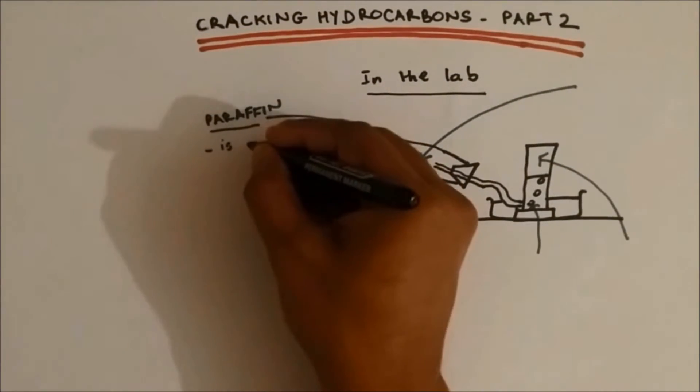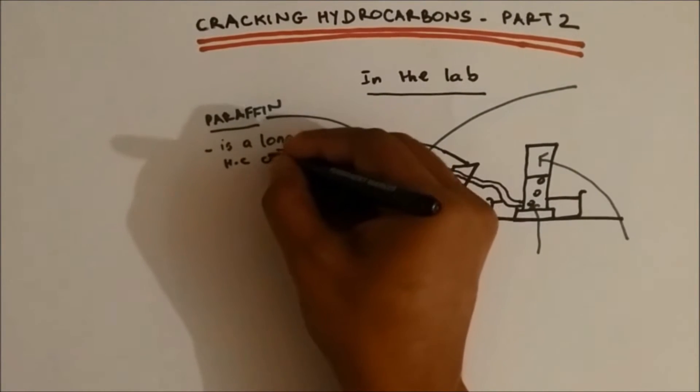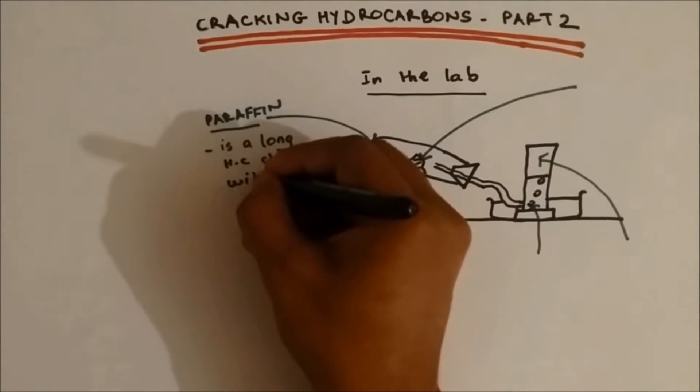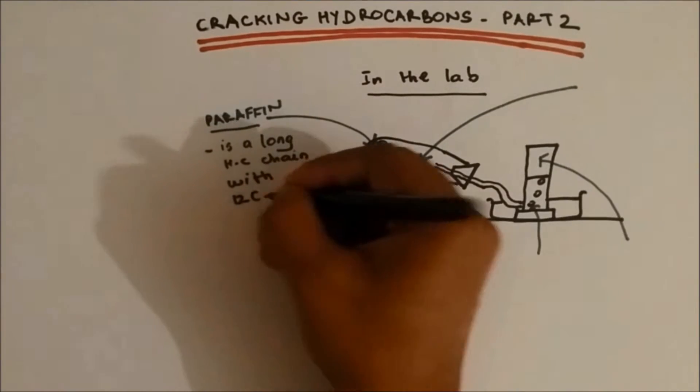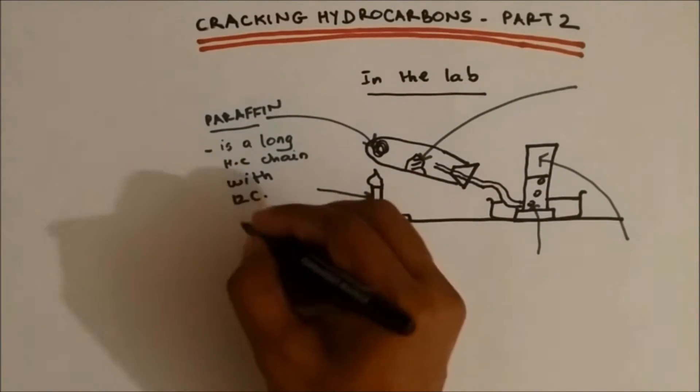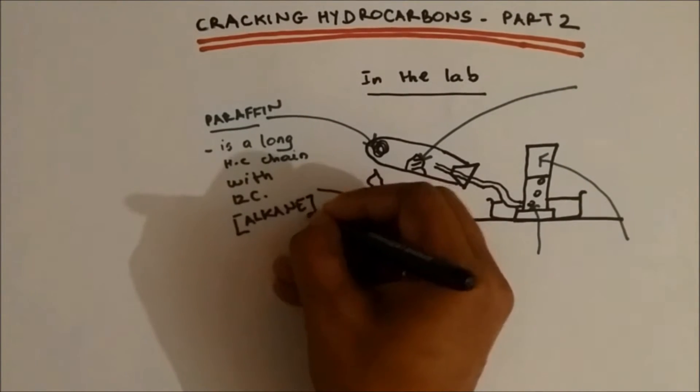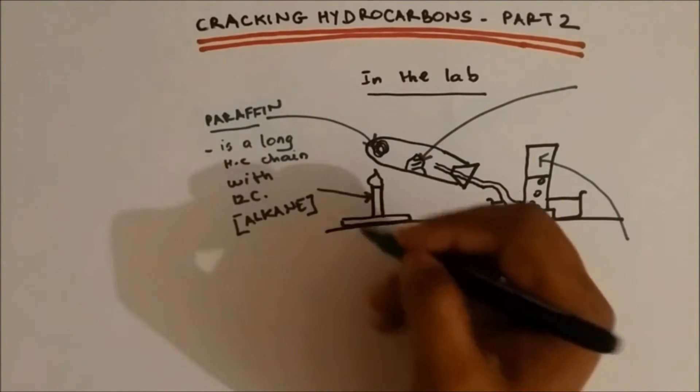Paraffin is a long hydrocarbon chain with 12 carbon. So this is an alkane containing 12 carbon.